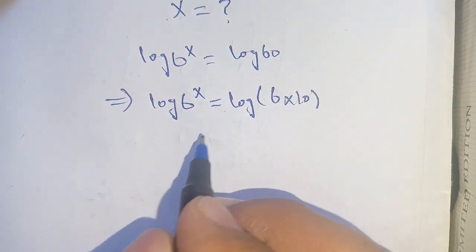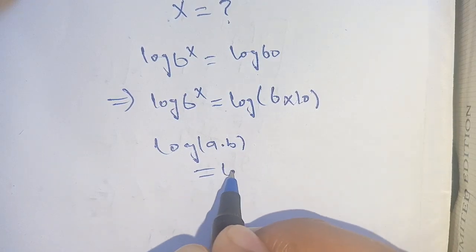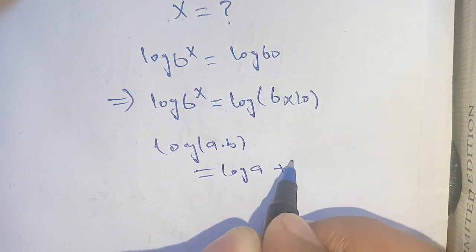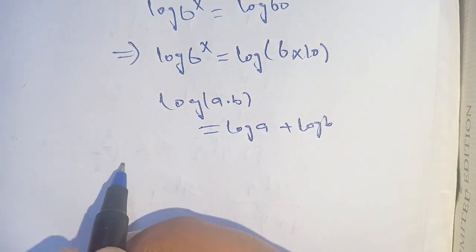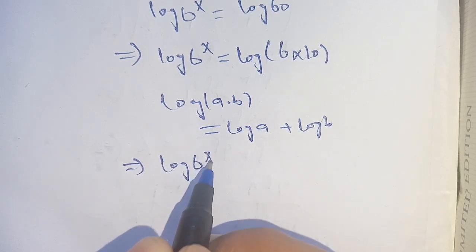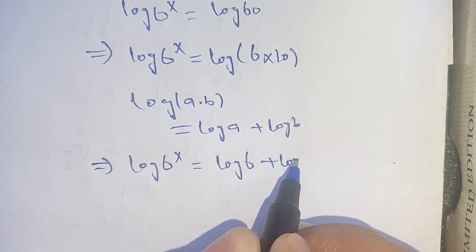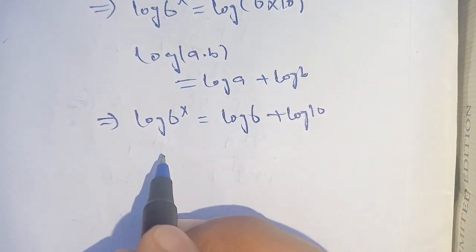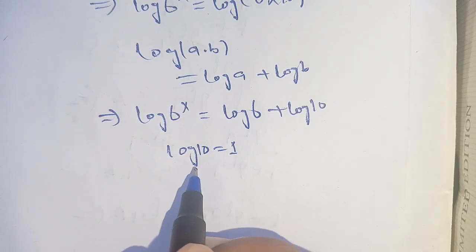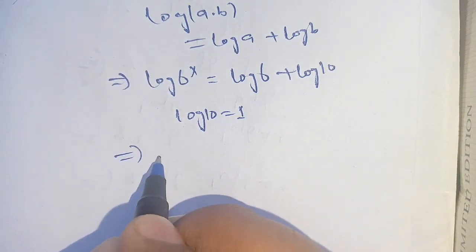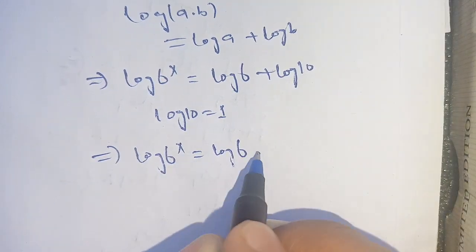Now, on using the logarithm property log of a times b is equal to log of a plus log of b, we use this identity on the right hand side and get log of 6 power x is equal to log of 6 plus log of 10. Since log of 10 is equal to 1, substituting gives log of 6 power x is equal to log of 6 plus 1.